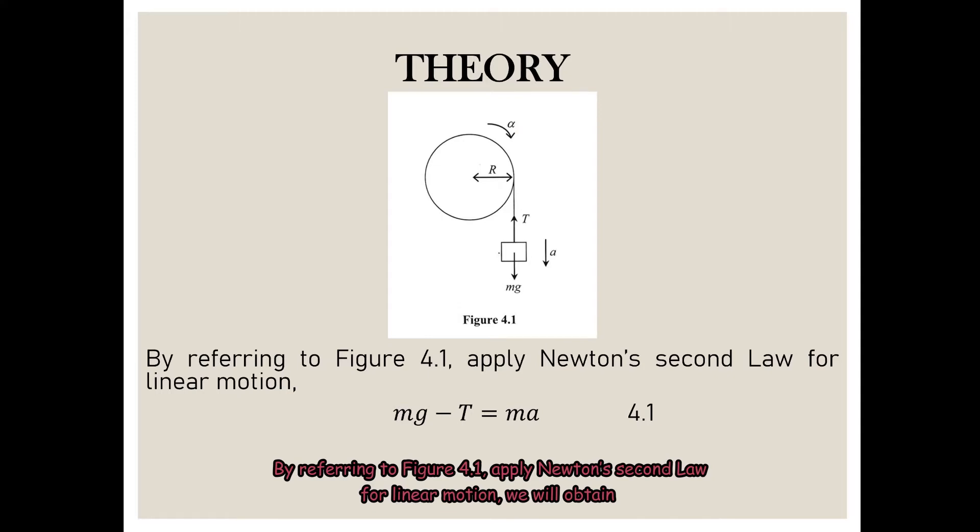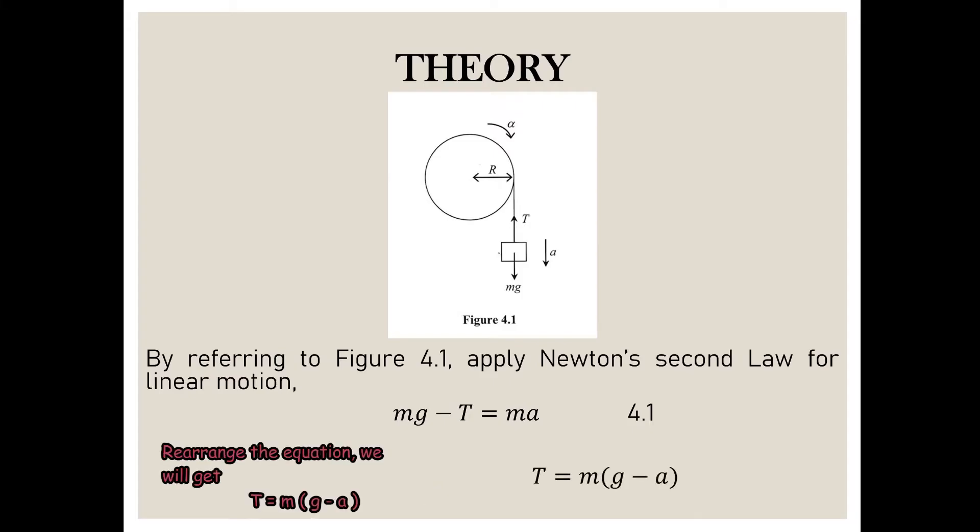By referring to figure 4.1, apply Newton's law for linear motion, we will obtain Mg minus T equals Ma. Rearrange the equation, we will get T equals Mg minus Ma.